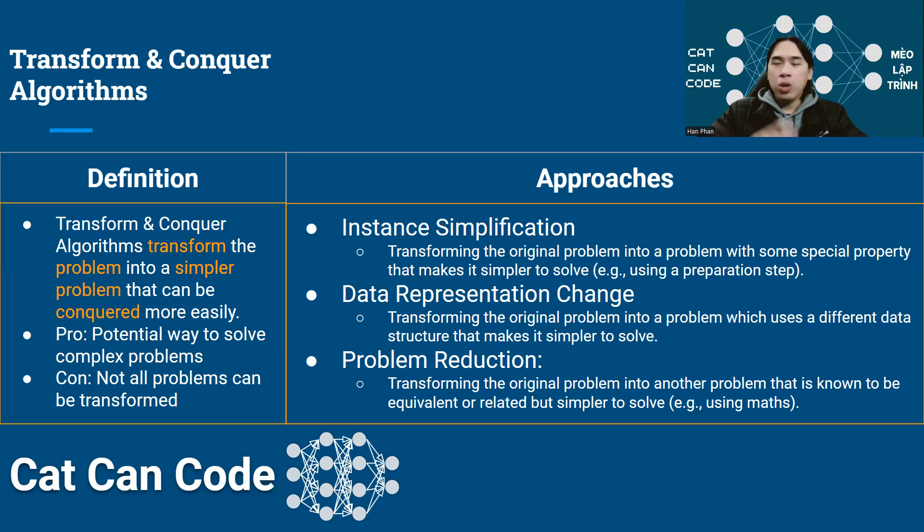The three approaches that we have in Transform and Conquer are instance simplification. It means I try to transform the original problem into a problem with some special property that makes it simpler to solve. For example, I'm going to do some preparation steps before I actually run my new algorithms.